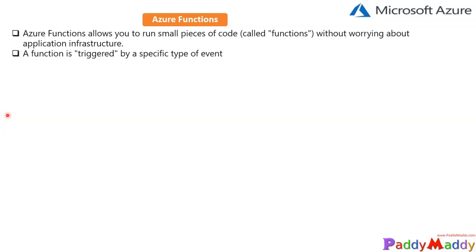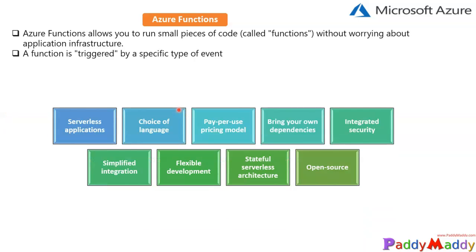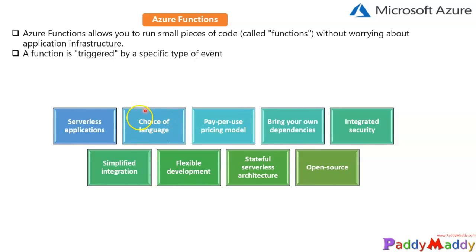Let's have a look at the other features available with Azure Functions. When we look at serverless applications, Functions allows you to develop serverless applications on Microsoft Azure cloud. The next feature is the choice of different languages — you have C#, Java, JavaScript, Python, or PowerShell — all these languages can be used within functions.